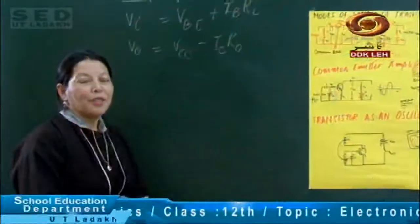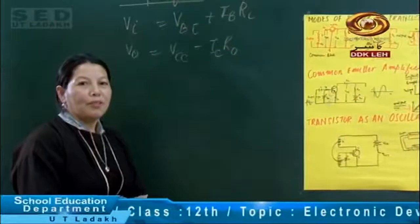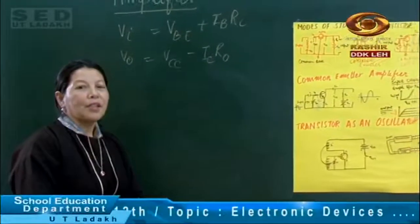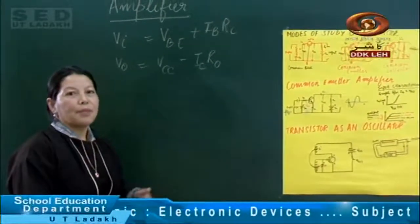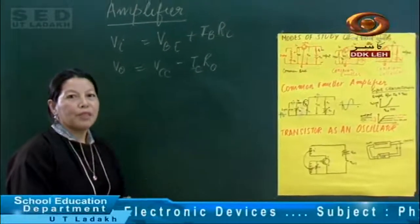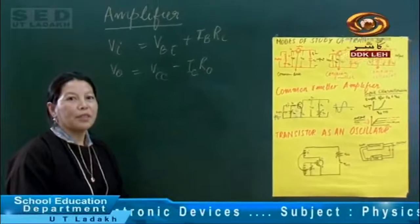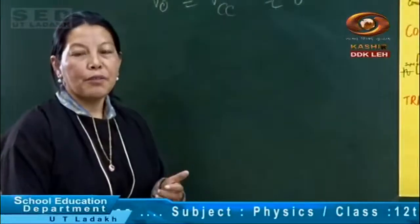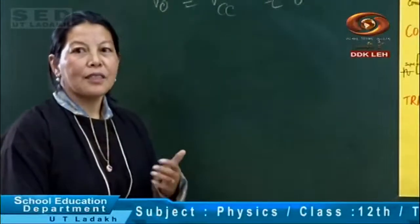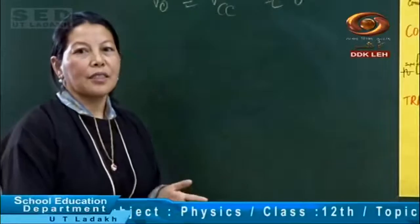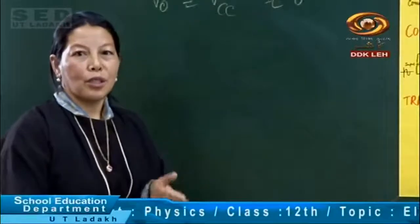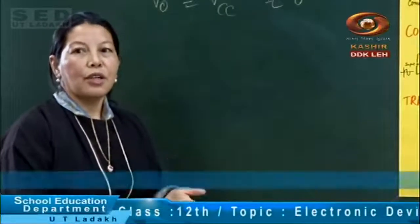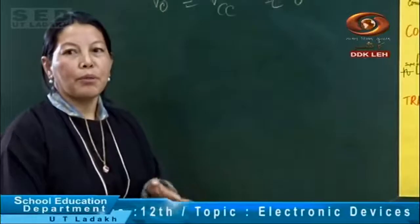Hello everyone, welcome again to the physics class. We are discussing electronic devices in this class. Yesterday we saw the amplifier — it was a circuit that takes a low input voltage signal and produces an output in the amplified form.